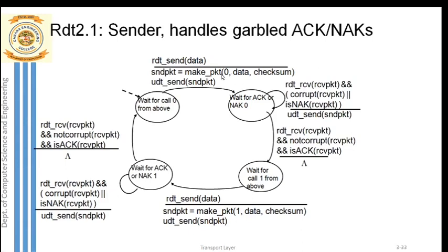So now three things are in the packet: the sequence number, the actual data or message content, and the checksum added to the data. This entire packet is stored in a variable called send_packet. The sender is now ready to send this packet. The packet is created at the transport layer — TCP creates this packet and pushes it to the network layer below. UDT send indicates the packet is sent to the network layer at the sender side.